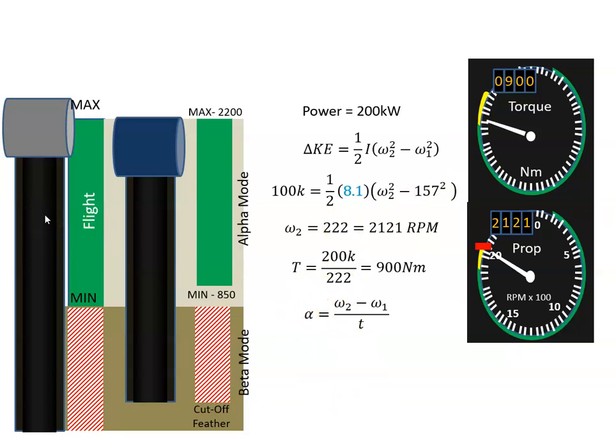If the pilot pushed the power lever forward very quickly, it was a rapid change and we got a change in RPM very quickly. Let's assume we went from 157 radians per second to 222 radians per second. Let's assume the power lever was slapped forward and this all happened in 0.5 seconds.